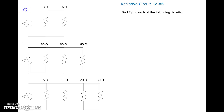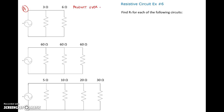Let's label this first one as circuit A. For that one we have two different resistances, and we could do the reciprocal equation, but if you just have two different values you can always use the product over sum.